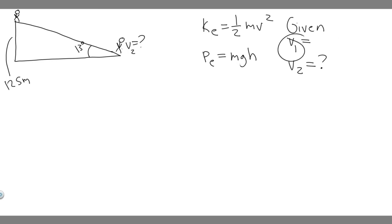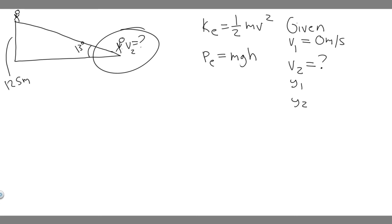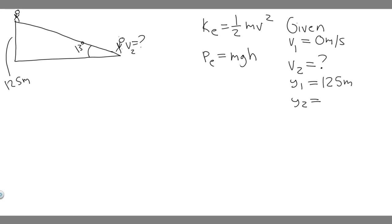We know they start from rest, so V sub one is zero meters per second. We also have height — I'll call this y one and y two. At y one, their height from the ground is 125 meters. At the end, they're at the bottom of the incline, so y two is zero meters.